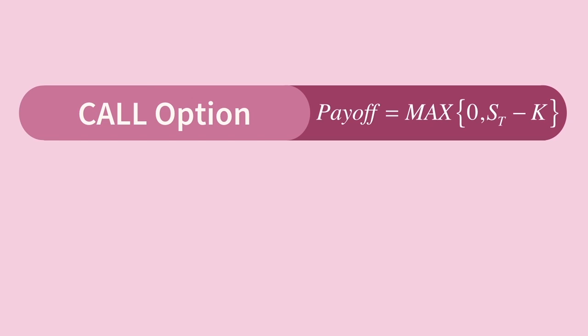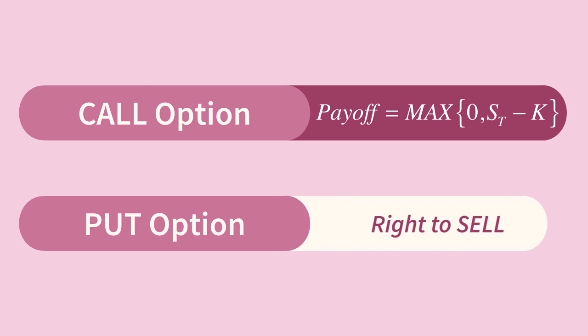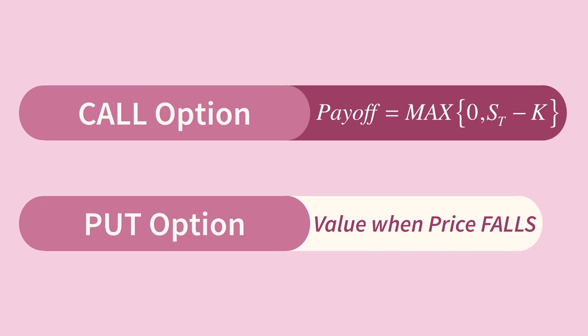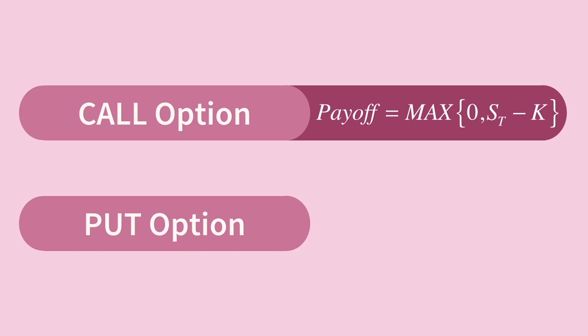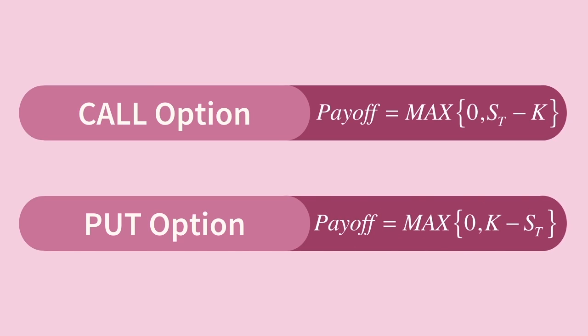The payoff is some positive number if the underlying price is higher than the strike price. With a put option we have the right to sell an asset at a predetermined strike price, so the relationship is backwards. The option has zero value if the market price is higher than the put's strike price, or some positive value if the option allows us to sell at a strike price higher than the market price.